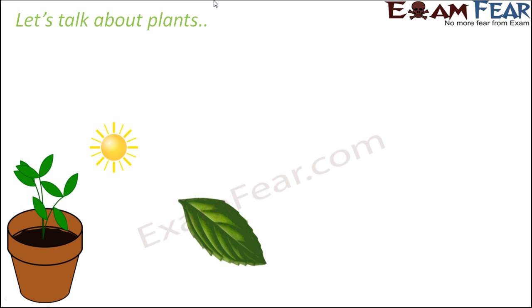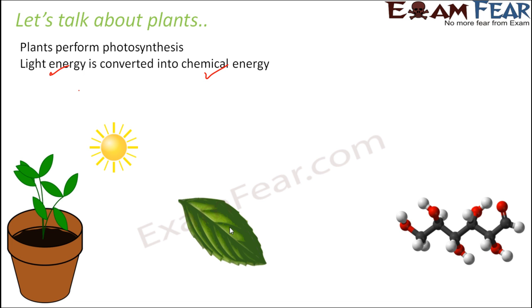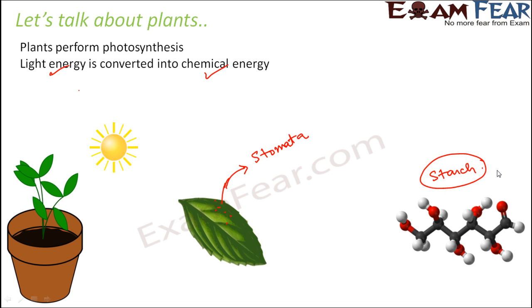If you closely look at the leaves of the plant, you will see that there are tiny pores which are called stomata. Plants perform photosynthesis by which they prepare their food — light energy from the sun gets converted into chemical energy, and food is prepared in the form of glucose. The food is then stored in the form of starch.